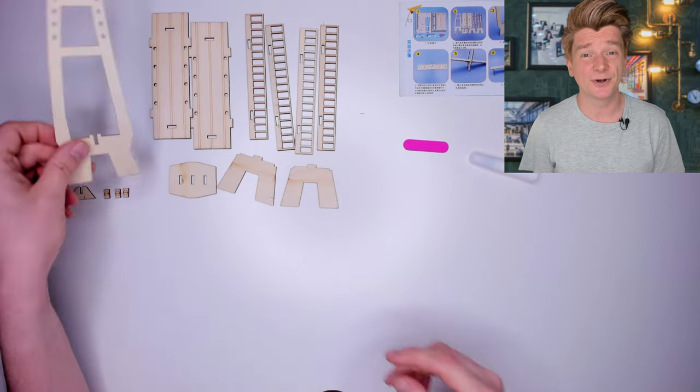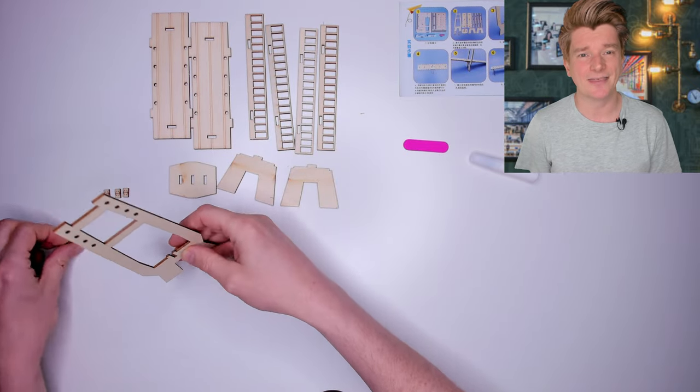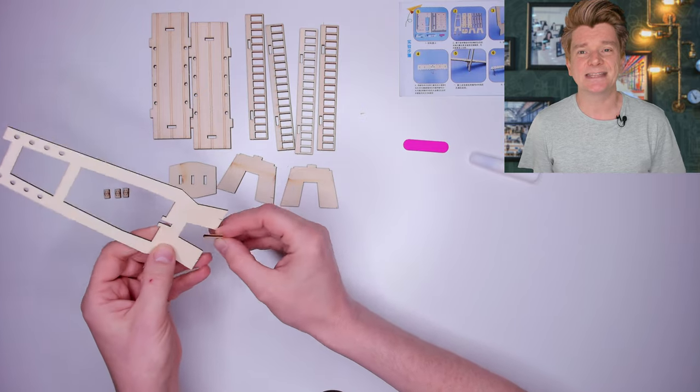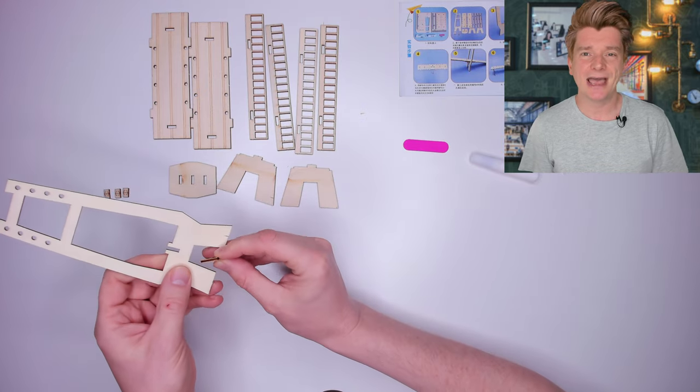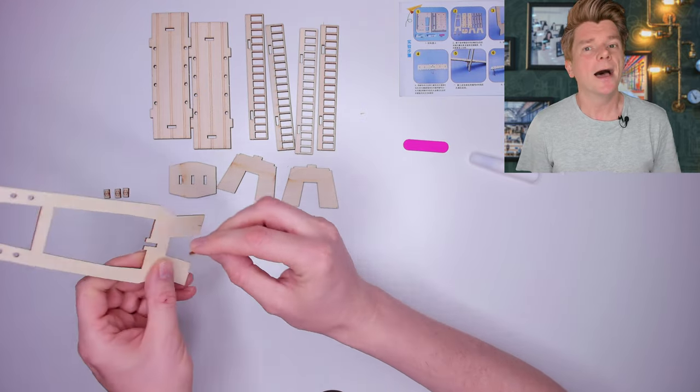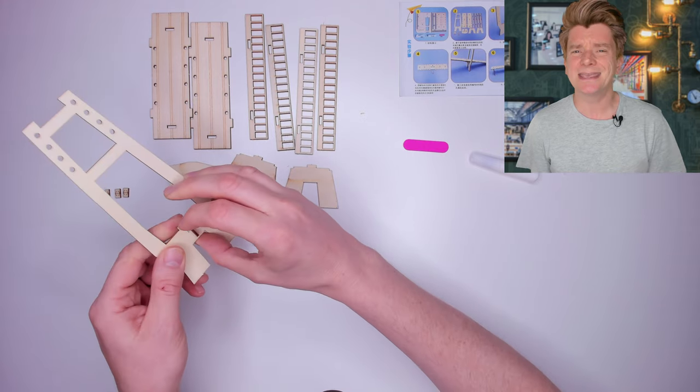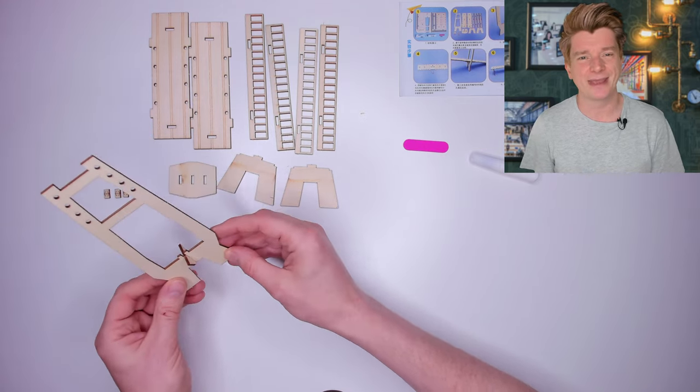Now all the pieces are popped out of the wood, I'm going to start assembling this together. First step is to take the main tall part of the bridge and put this little cross section in. I'm not sure what these are called in bridge making terminology, if you have any idea let me know in the comments.